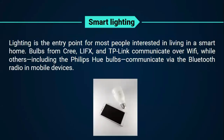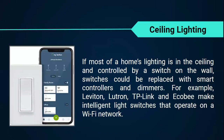Smart lighting. Lighting is the entry point for most people interested in living in a smart home. Cree, LIFX, and TP-Link communicate over Wi-Fi, while others, including the Philips Hue bulbs, communicate via the Bluetooth radio in mobile devices such as your smartphone, tablet, or iPad. For ceiling lighting, if most of a home's lighting is in the ceiling and controlled by a switch on the wall, those switches could be replaced with smart controllers and dimmers.